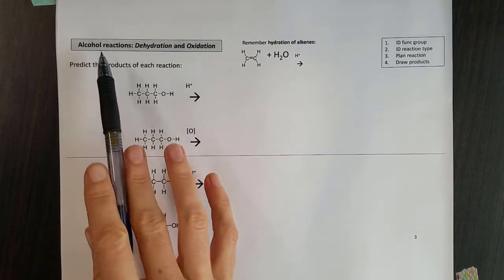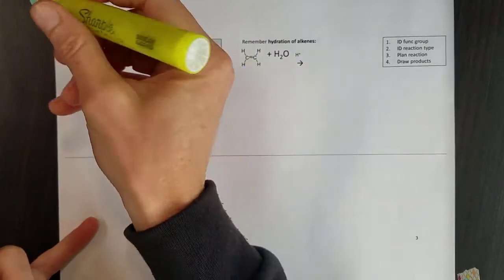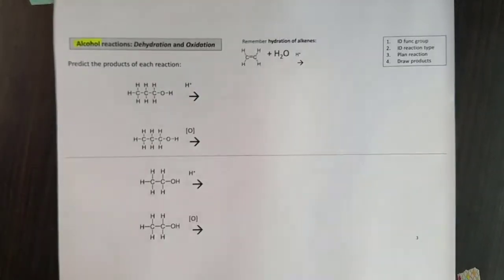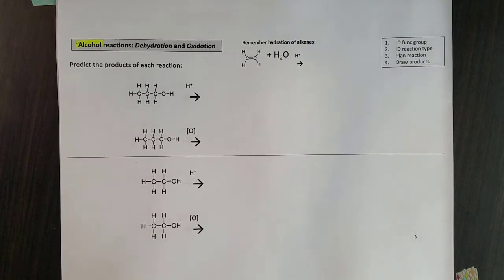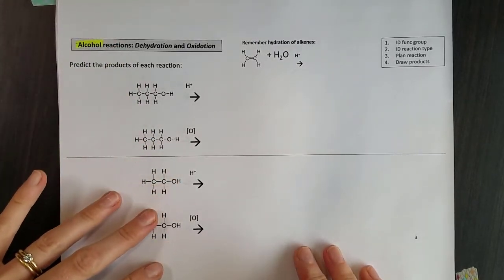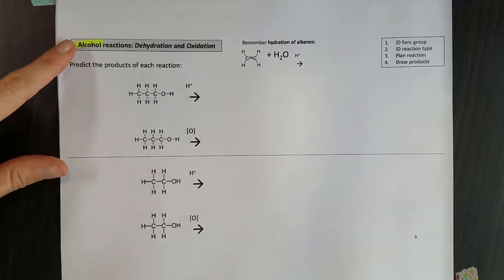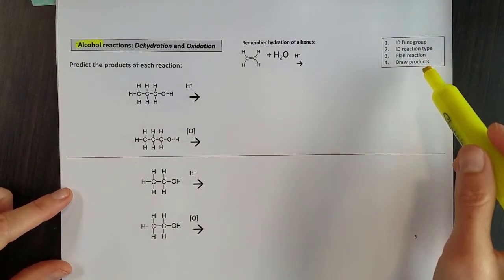We're going to learn about some reactions for our alcohols now. With these reactions you're going to want to practice and practice and practice, take it slow, be methodical. They seem a little bit challenging at first because they all look alike, right? Lots of H's, lots of O's, but with practice you can start to pick out the patterns. There's a couple steps I'm going to recommend you follow as you work on these.